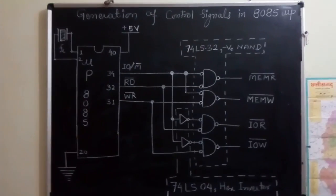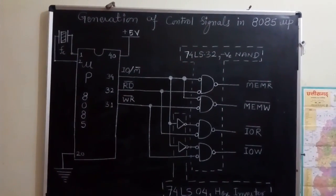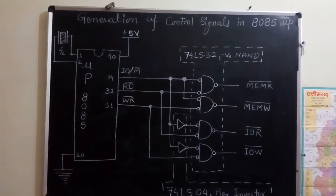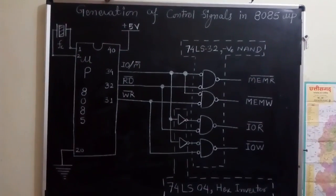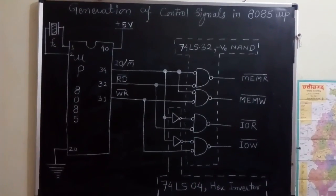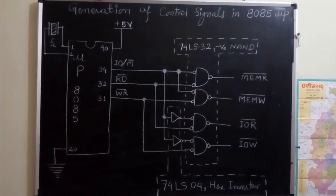As it is clear from the diagram that whenever IOM bar is active low, it is a memory operation and in association with the read bar, the memory read bar is generated. These negative NAND gates are actually acting as OR gates.